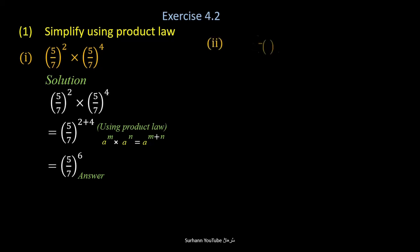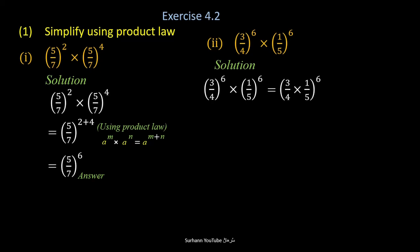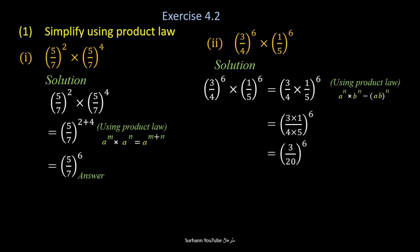Problem number 2: 3 upon 4, whole to the power 6, and 1 upon 5, whole to the power 6. Here the base value is different but the power is the same, so we will multiply their base values only and the power will be common. The law says that when bases are different but powers are the same, we multiply the bases. Now simplify it and get the answer.